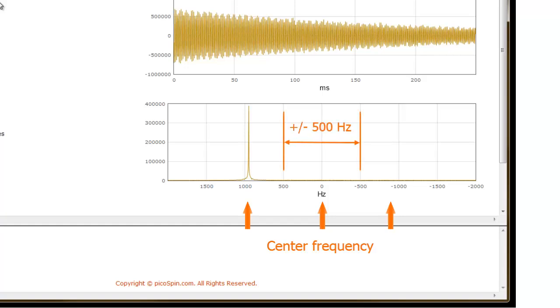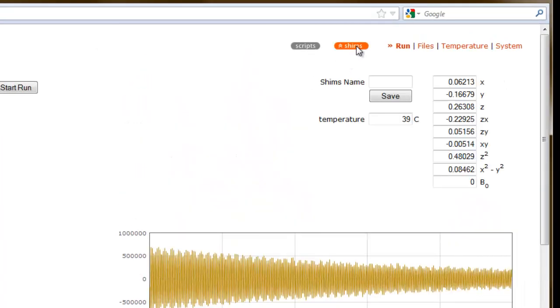For shimming, we need to place our signal within plus or minus 500 Hz of the center frequency. We'll adjust our signal's position shortly. If we navigate to the Shims button and select it, a new user interface field will appear.